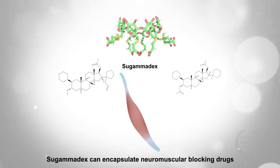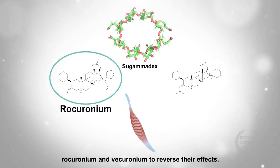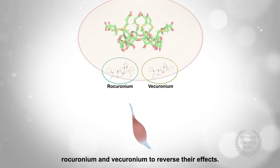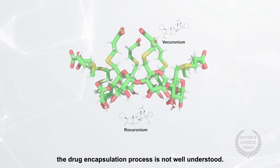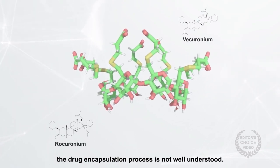Sugammadex can encapsulate neuromuscular blocking drugs rocuronium and vecuronium to reverse their effects. Although the clinical actions of Sugammadex are well known, the drug encapsulation process is not well understood.